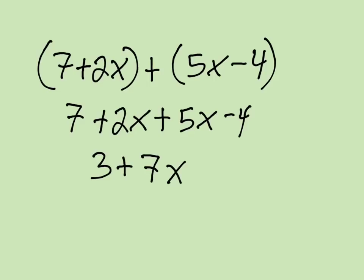You can think of that as apples — 2 apples plus 5 apples is equal to 7 apples. And that is combining like terms and adding linear expressions.